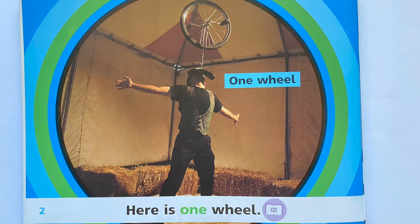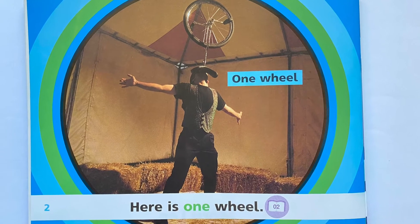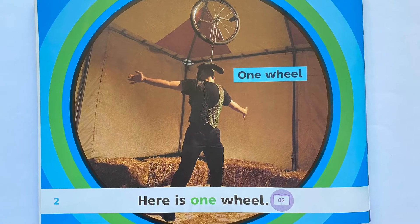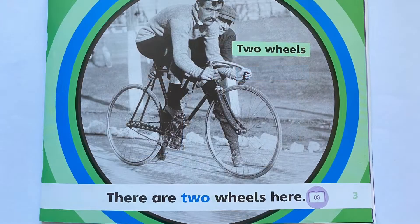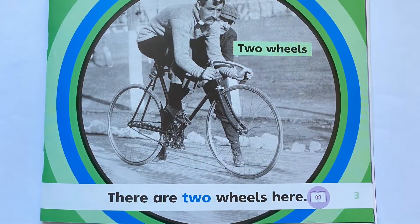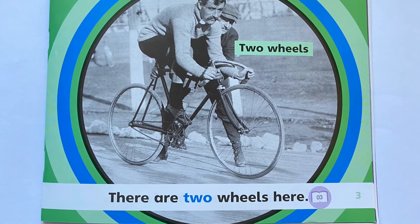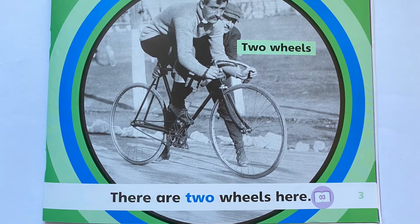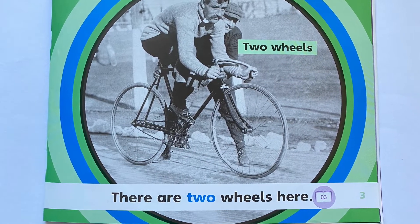One wheel. Here is one wheel. Two wheels. There are two wheels here.